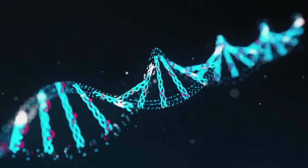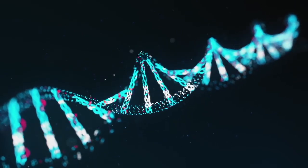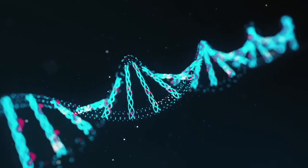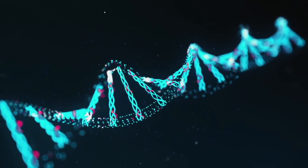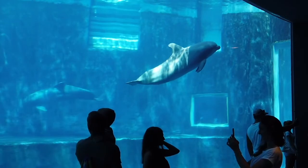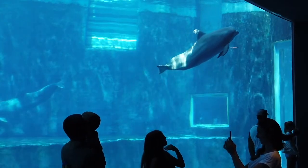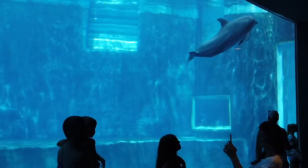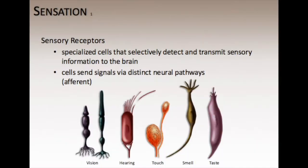From an evolutionary perspective, the purpose of sensation and perception is adaptation that improves a species' chance for survival. Before information can be organized in the brain, it must be detected from the outside world. Sensory receptors are cells that detect and transmit information to sensory nerves in the brain via the afferent pathway.